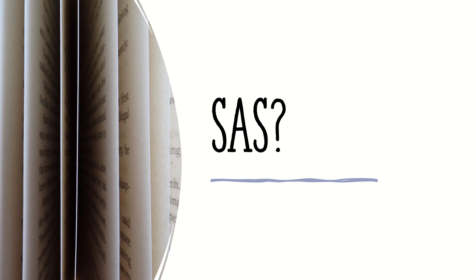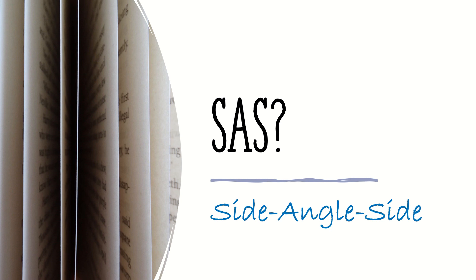The first one is S-A-S. What does S-A-S mean? That is correct. S-A-S means Side, Angle, Side. The Side Angle Side Congruence Postulate states that if two sides and the included angle of a triangle are congruent to two sides and the included angle of another triangle, then the two triangles are congruent.